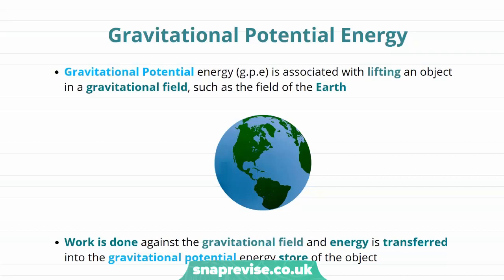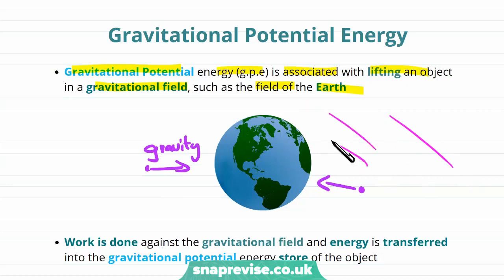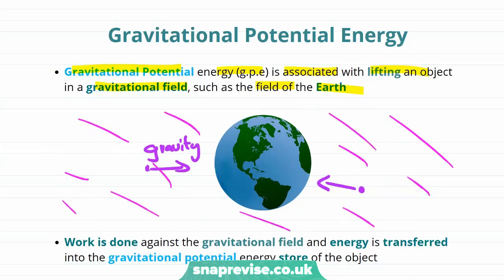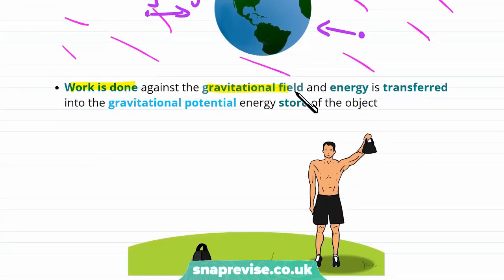Gravitational potential energy is the energy associated with lifting an object in a gravitational field, such as the gravitational field of the Earth. Things are attracted to the Earth by gravity, and this is because the Earth creates a gravitational field. When we lift an object in a gravitational field, work is done against the gravitational field and energy is transferred into the gravitational potential energy store of the object.